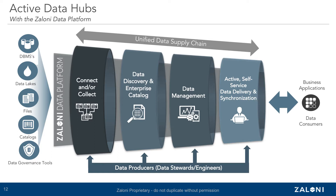Moving to the right, data might be enriched or improved via data quality and data transformations as part of the data management phase. Only the most trusted data sets might be available for delivery and provisioning. You can say, I'm going to move data from bronze to silver to gold, and maybe certain lines of business can only see data that's in the gold zone or has been marked as fit for use. Data consumers or business applications can then quickly search, find, and use the most trusted data in the catalog.